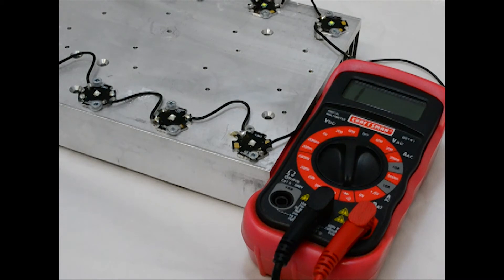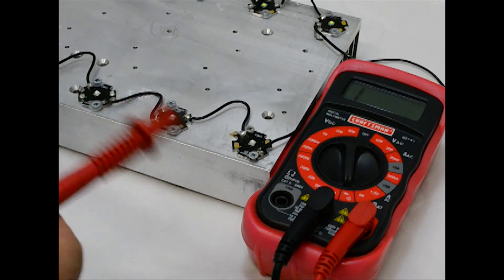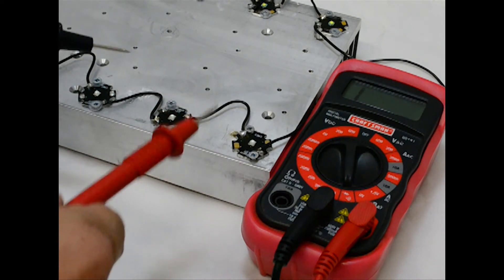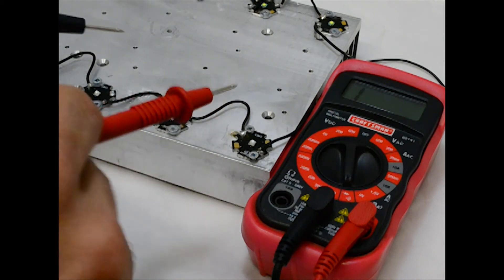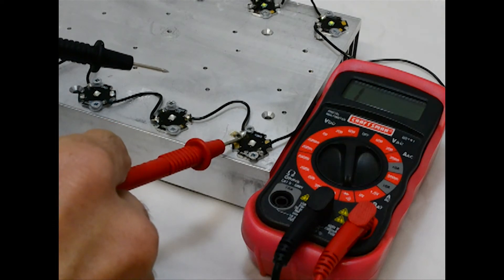I've already set my meter to the diode setting, so I'm ready to take my probes and touch them to my LED string and the heat sink. Take one probe, put it to the joint you want to test, which in this case is going to be this one.